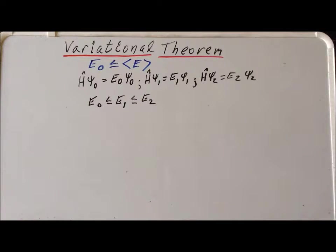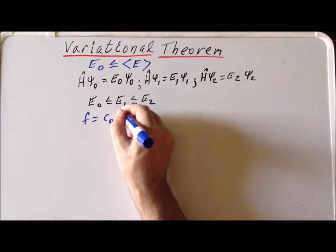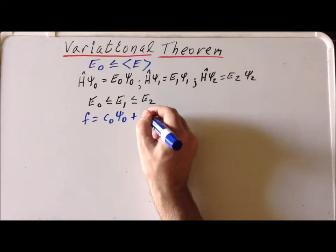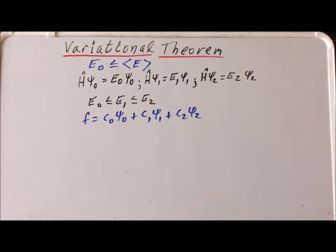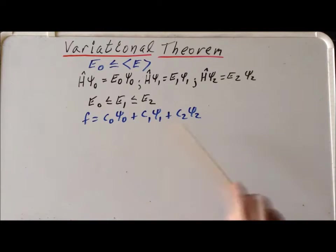Now, we also know that we can write any function we like as a linear combination of the eigenfunctions of an operator. So, for example, we can write some general function f as c sub 0 times psi sub 0, plus c sub 1 times psi sub 1, plus c sub 2 times psi sub 2. The reason we can do this is that the eigenfunctions of an operator form a complete set — you can also think of it as they form a basis in Hilbert space — so we can write any function we like as a linear combination with the appropriate coefficients c0, c1, and c2.